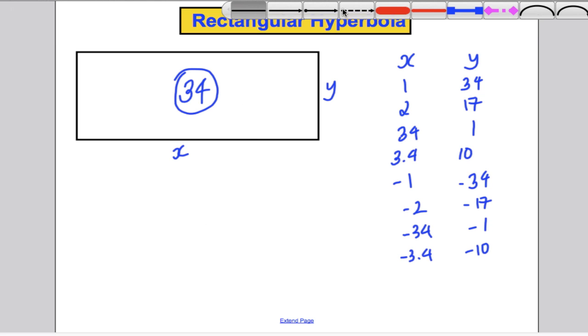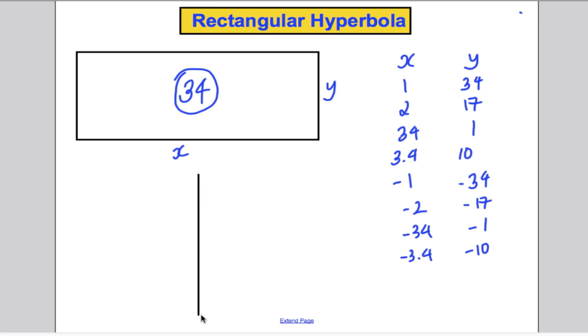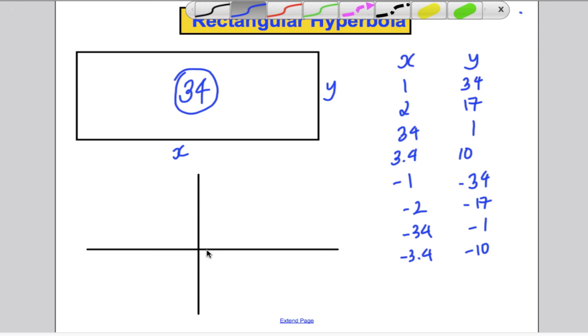Now there are infinitely many numbers. What would happen if we plot these numbers? 1 against 34. Here's my x and here's my y. 1 against 34. 2 against 17. 34 against 1. 3.4 against 10.